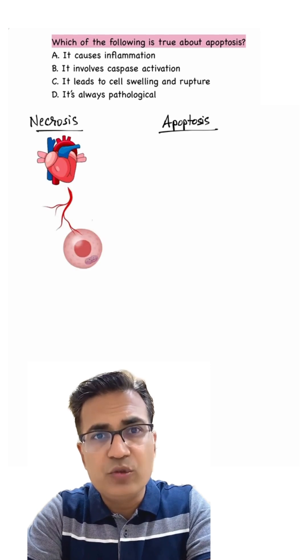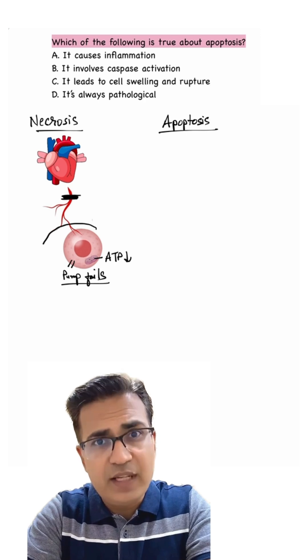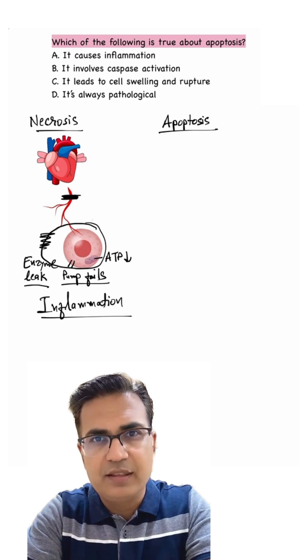Necrosis occurs mainly due to ischemia. ATP levels drop, ion pumps fail, the cell swells, membrane rupture and enzymes leak out causing inflammation, causing tissue damage.